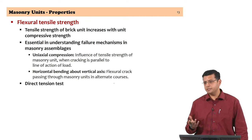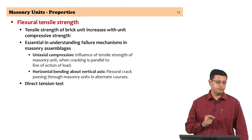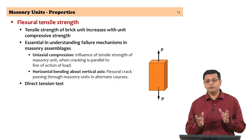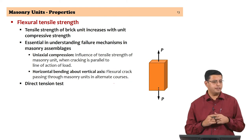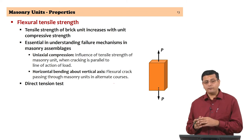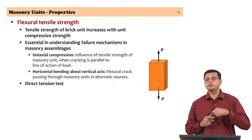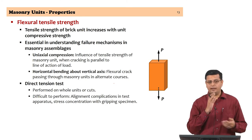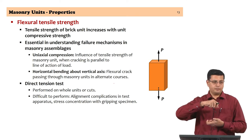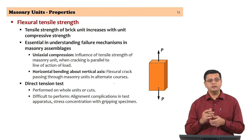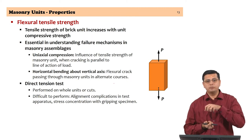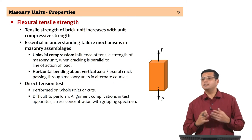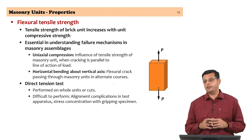A direct tension test is prescribed to get the actual tensile strength of the brick unit; however there are challenges. Brick units can vary in size, gripping the unit is difficult, ensuring correct alignment, and avoiding stress concentration and local crushing at the gripping ends are all problems when trying to carry out a direct tension test. Hence a direct tension test is not usually adopted and we make do with the flexural tensile strength test.